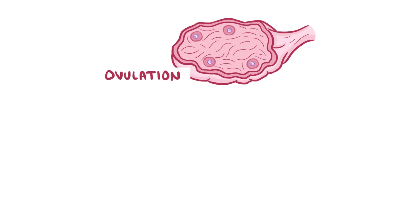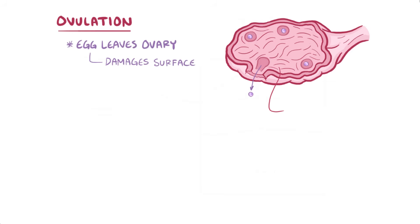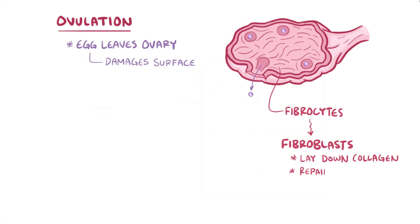During ovulation, the oocyte pops out of the ovary, causing a bit of damage to the surface. Fibrocytes detect that damage and differentiate into fibroblasts, and lay down collagen to help repair the damage.